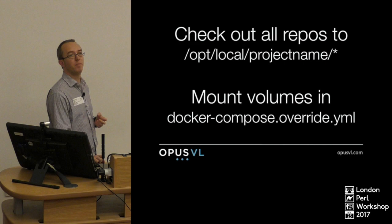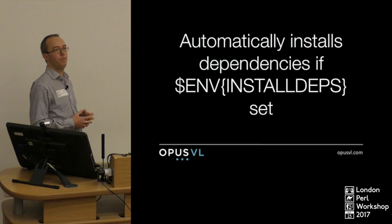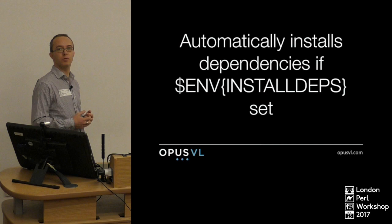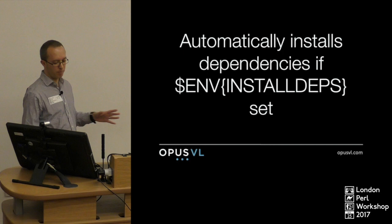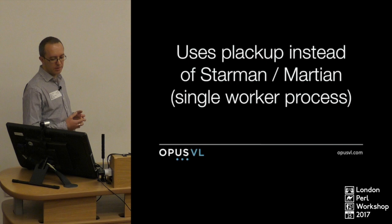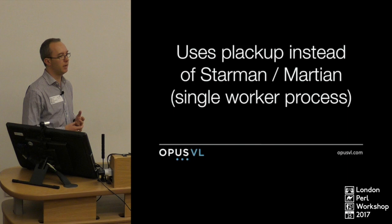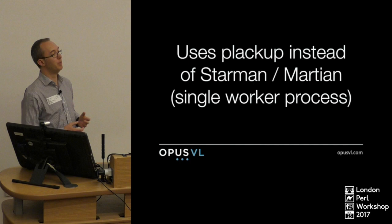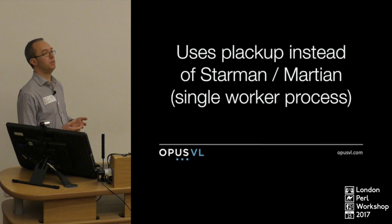If you've added a new module, you may find missing dependencies and the container won't run. There's another environment variable — install_deps — and if set, the entry point will run CPANM on all modules it finds at runtime. You'll still need to rebuild the container before distributing it elsewhere, but for development mode this will get you going. Finally, it uses plackup instead of a web server like Starman or Martian. Martian is an extension of Starman that adds memory limiting — you can tell it to recycle processes when they've used a certain amount of RAM. In dev mode it just uses straight plackup for a single worker process, which is easier for debugging or profiling.